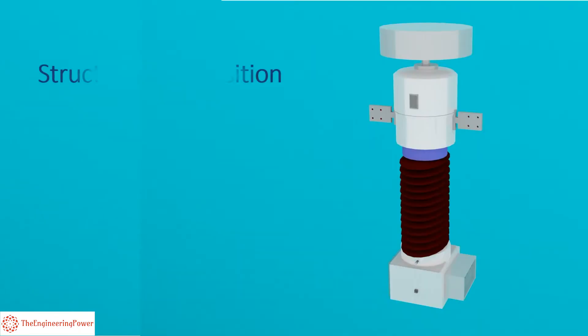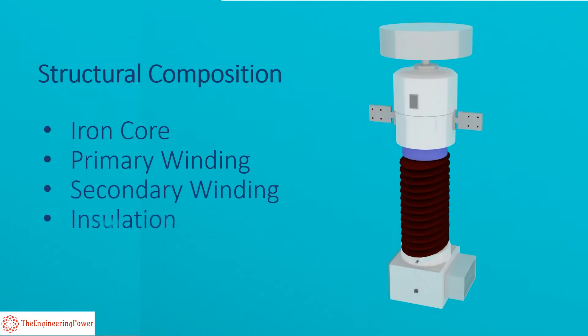Now we explain the structural composition of the current transformer. There are four major components of any current transformer: iron core, primary winding, secondary winding, and insulation.